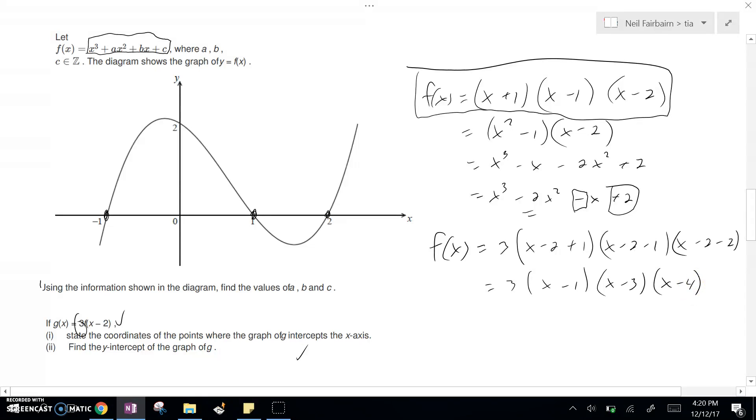From this, we can see the coordinates of where we have the x, we intercept the x-axis, would be at x equals one, x equals three, and x equals four. So our points would be one, zero, three, zero, and four, zero.